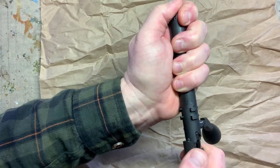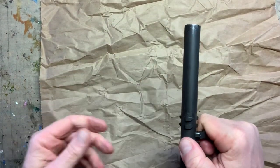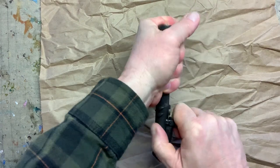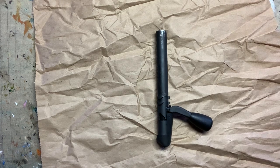Then turn it clockwise to lock it in. That's it. Keep a grip on the bolt, turn this clockwise. That's it, bolt is put together. Put it back in your rifle and have fun shooting.